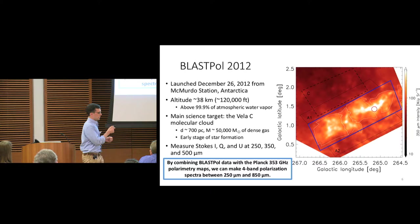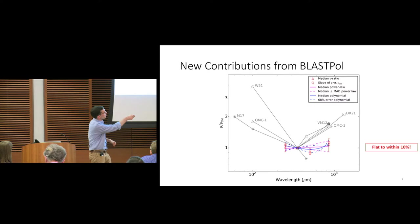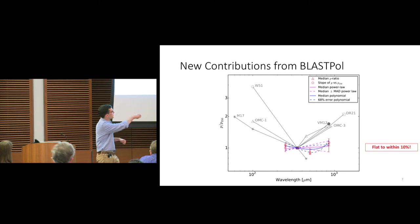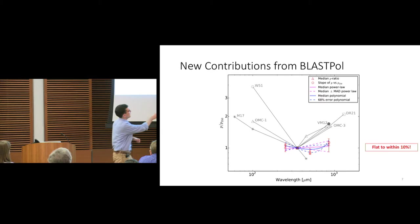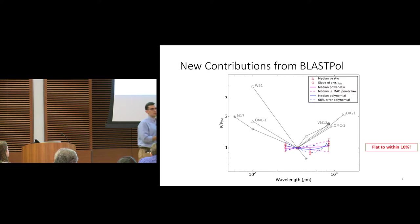Combining BlastPol data with the Planck 353 GHz polarization maps, we can make four-band polarization spectra going from 250 to 850 microns. Here are the four data points from our analysis, overlaid on that same plot. Our points are flat to within 10%. Everything you see — whether taking a linear fit, a power law fit, or a polynomial fit — they all come out pretty much flat. You don't see correlations with temperature or column density.